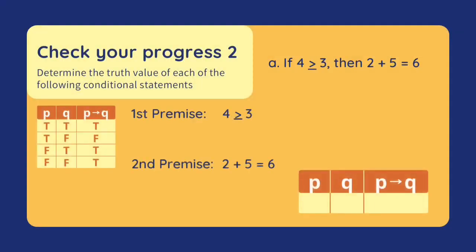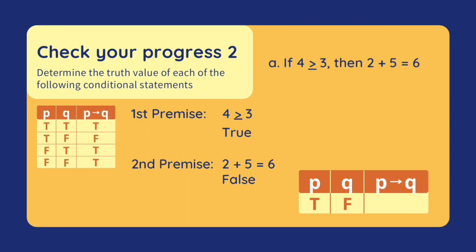Let's check our progress. Determine the truth value of each of the following conditional statements. Letter A: If 4 is greater than or equal to 3, then 2 plus 5 equals 6. Our first premise is '4 is greater than or equal to 3.' This is true because 4 is indeed greater than 3. Our second premise is '2 plus 5 equals 6.' This is false because 2 plus 5 equals 7. Since our antecedent is true and our consequent is false, our conditional is false.